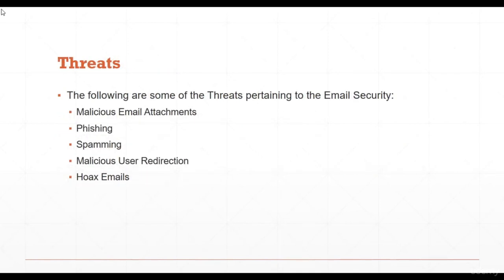Email security threats include: malicious email attachments — emails are the biggest carriers of malicious attachments that compromise user systems; phishing — phishing mails lure victims to provide personal data; spamming — unsolicited bulk emails may contain malware allowing attackers to take control of the victim's system; malicious user redirection — mails containing links to websites hosting malware; and hoax emails — false information sent to victims exploiting human emotions.